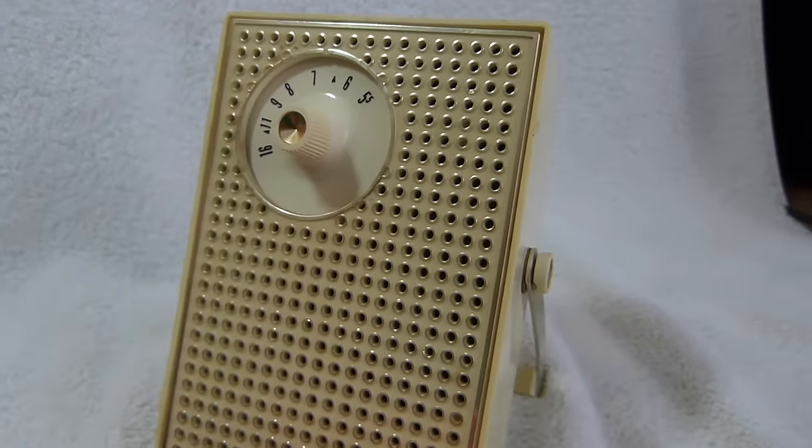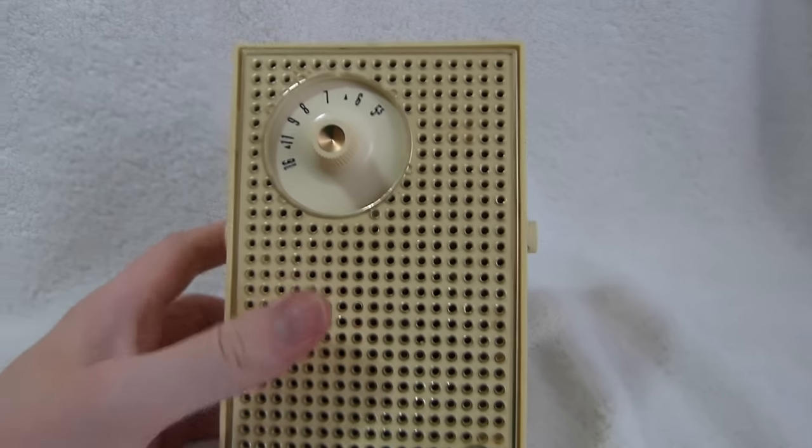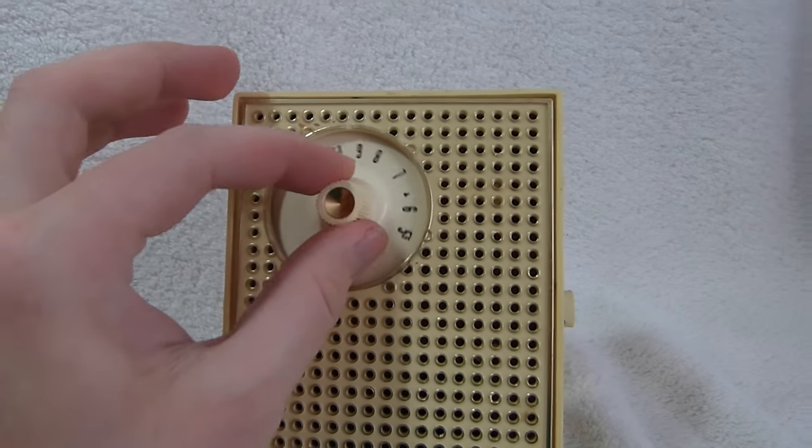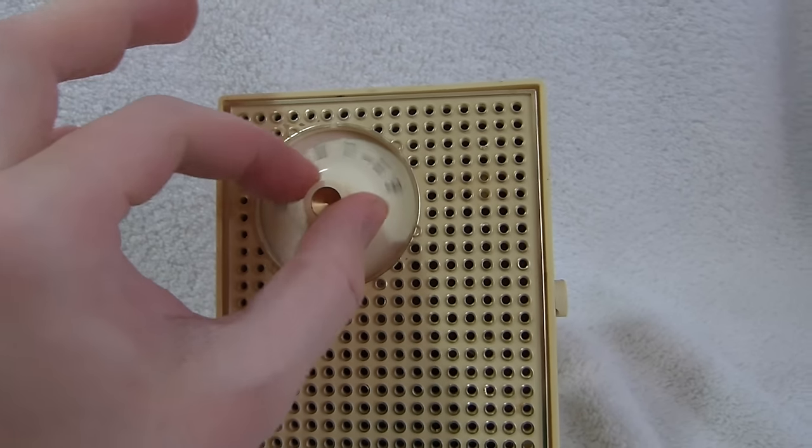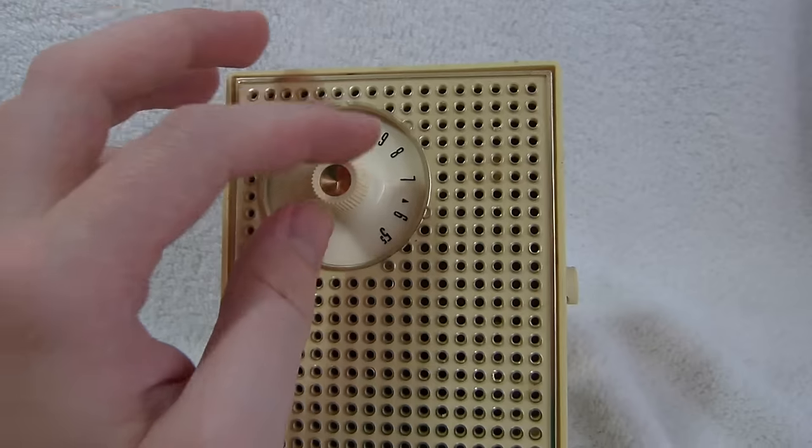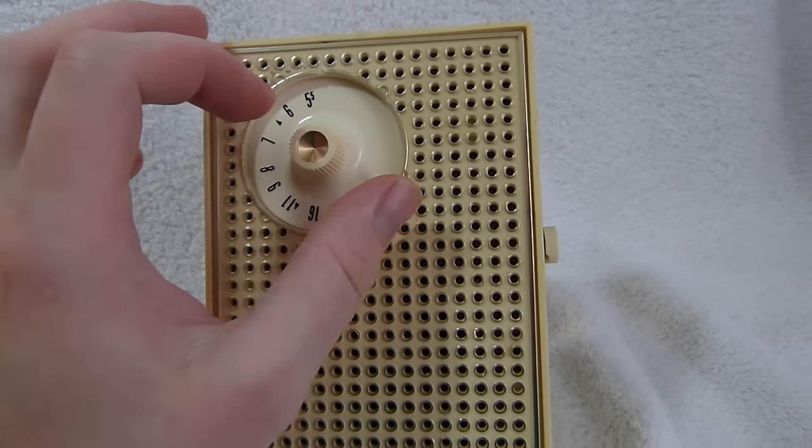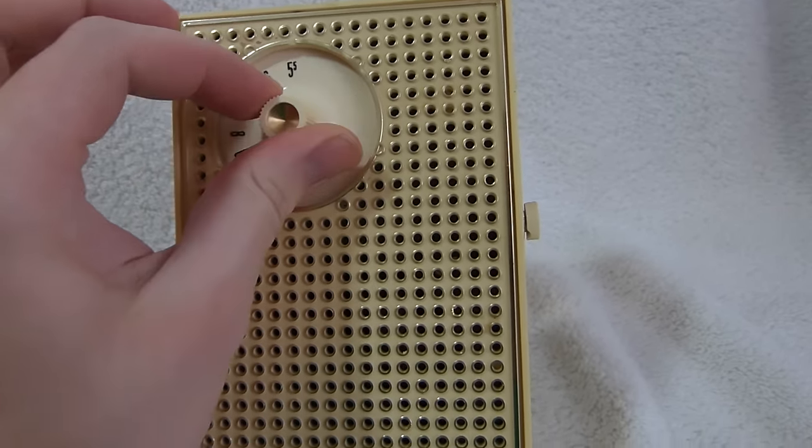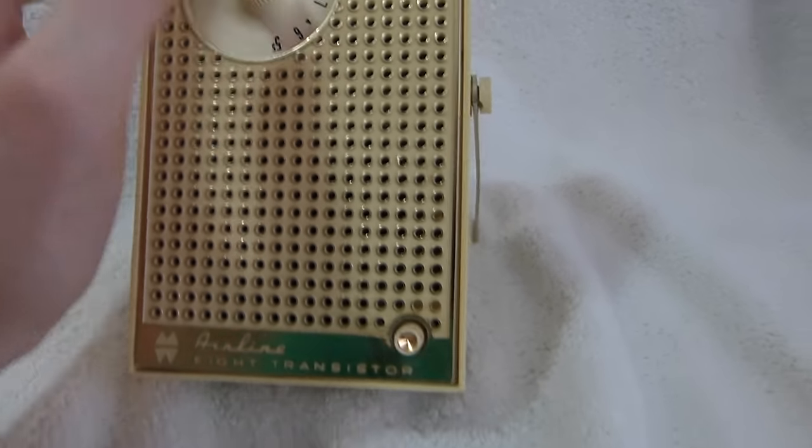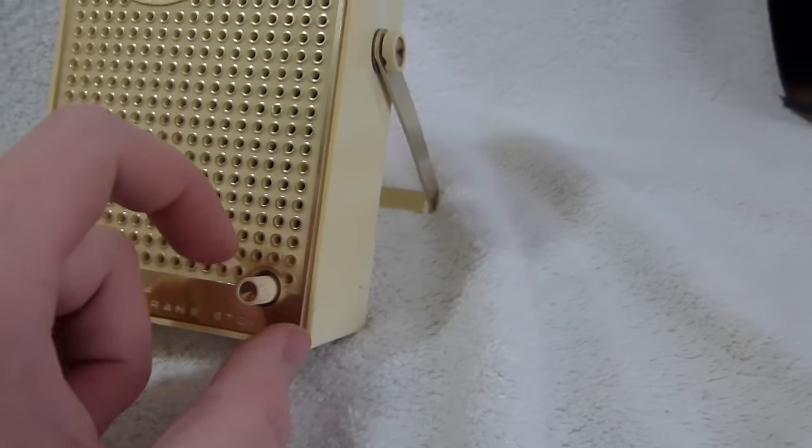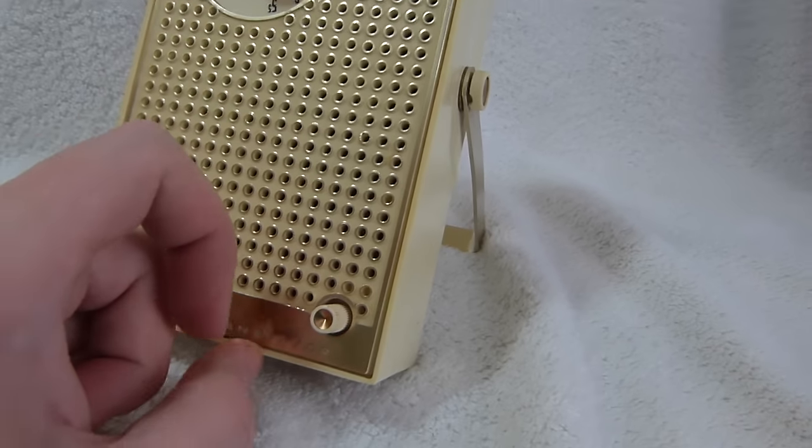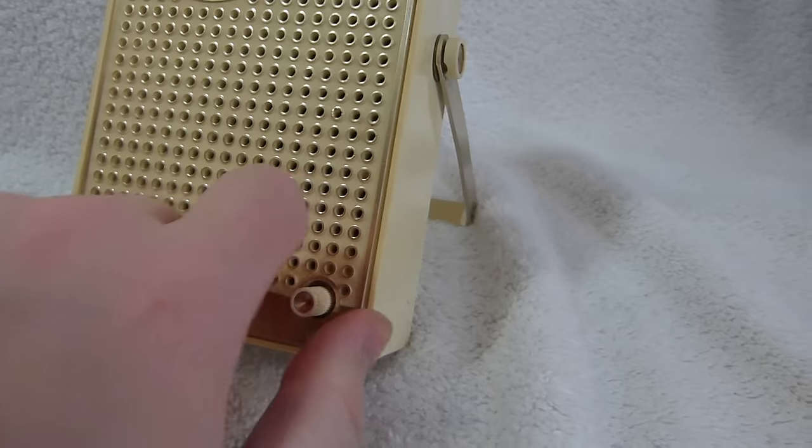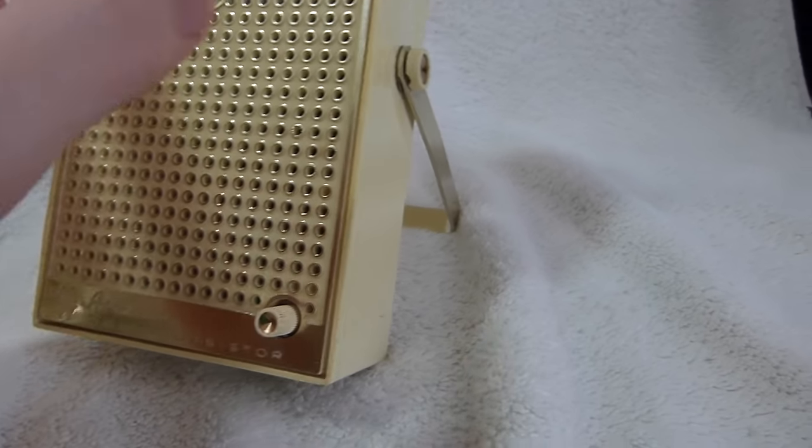This set suffers the same design issue as the original Zenith Royal 500B. It's got a small tuning knob and no gear reduction tuning. If they had made either the knob bigger or added gear reduction, tuning would be a lot easier. And turning on the power switch is a little tough too, since it uses a full size tube radio style volume control which takes a fair bit of force to switch on and off.